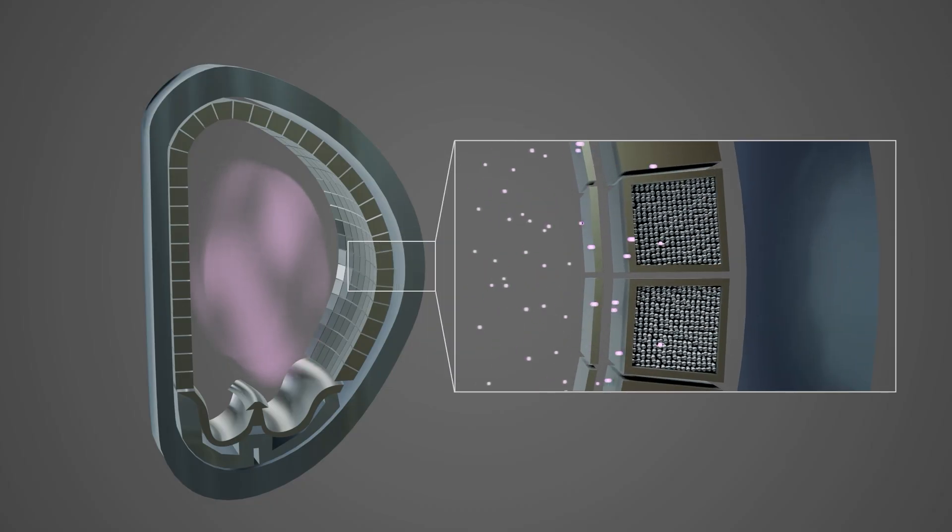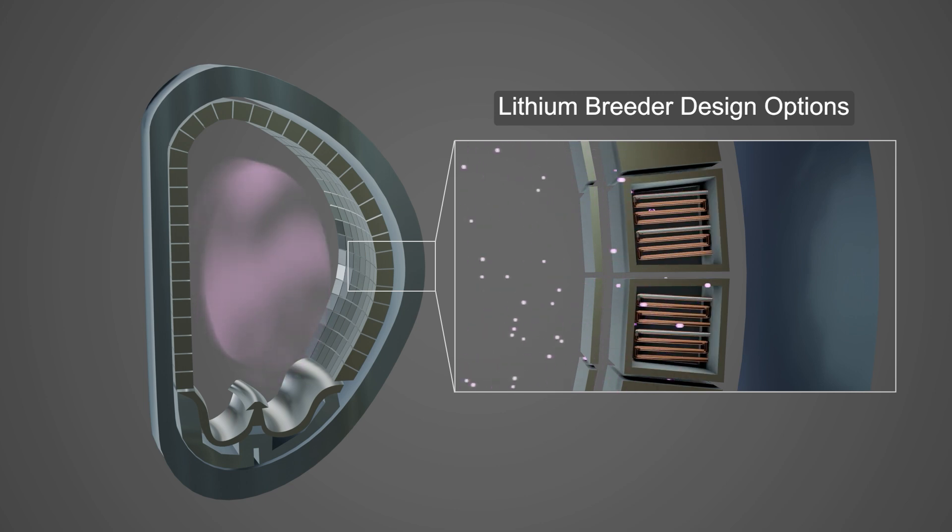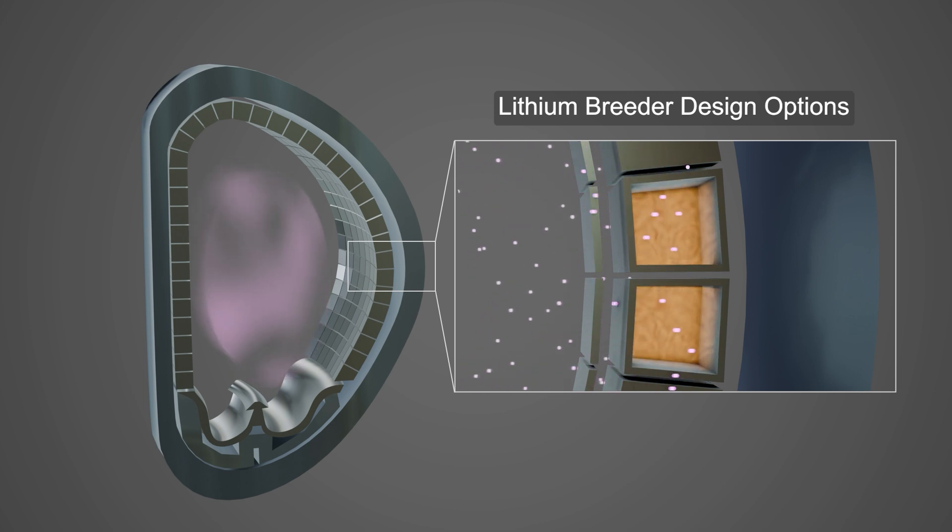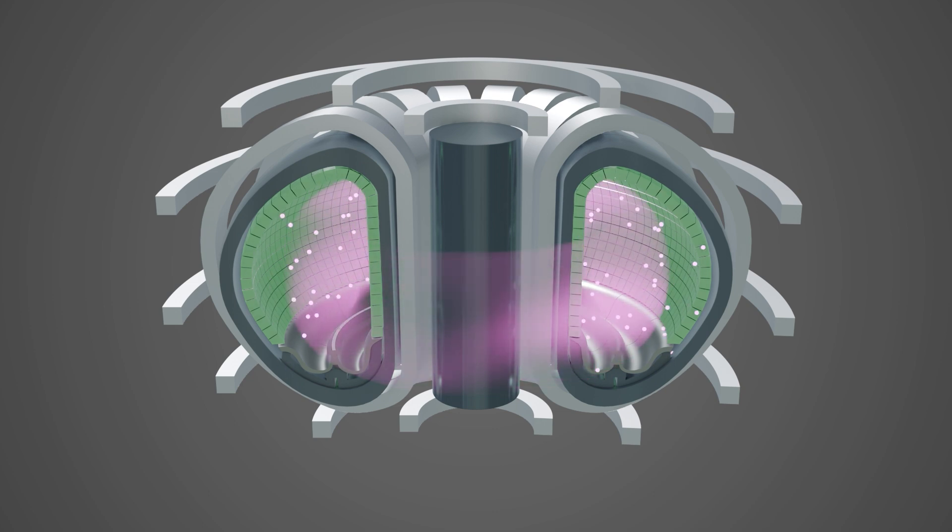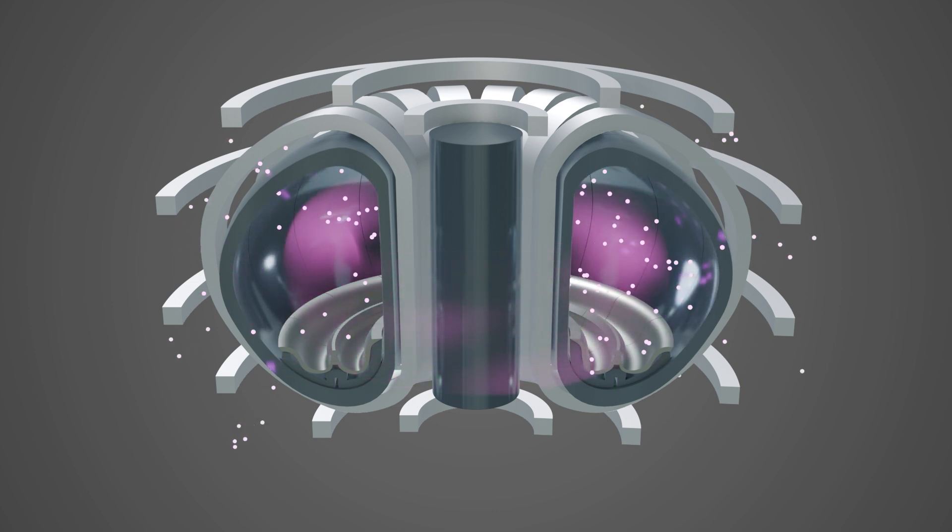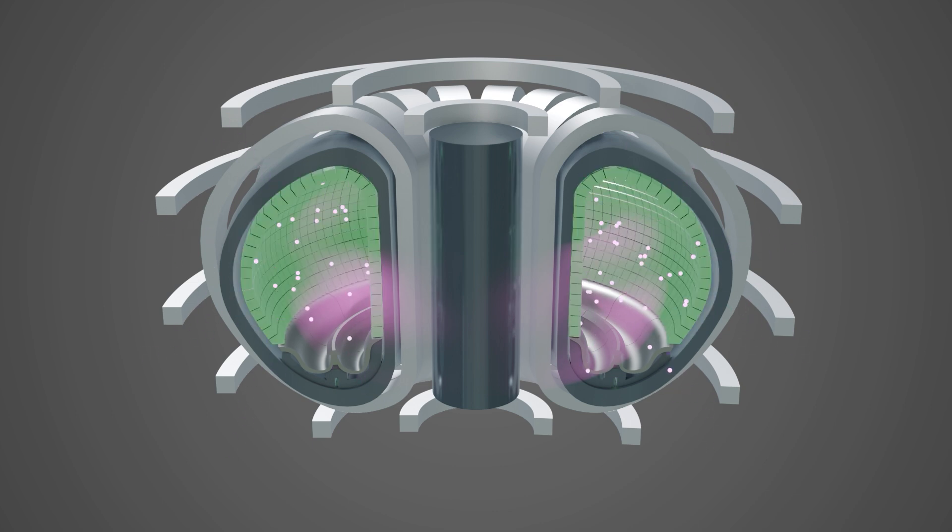Lithium breeders come in many forms: as solid ceramic pebbles, as flowing or static liquid, or molten salt. The lithium-based breeder is often called a blanket because it not only generates tritium, but also acts as a protective shield in the tokamak, stopping neutrons moving further out to the plant and capturing the heat.